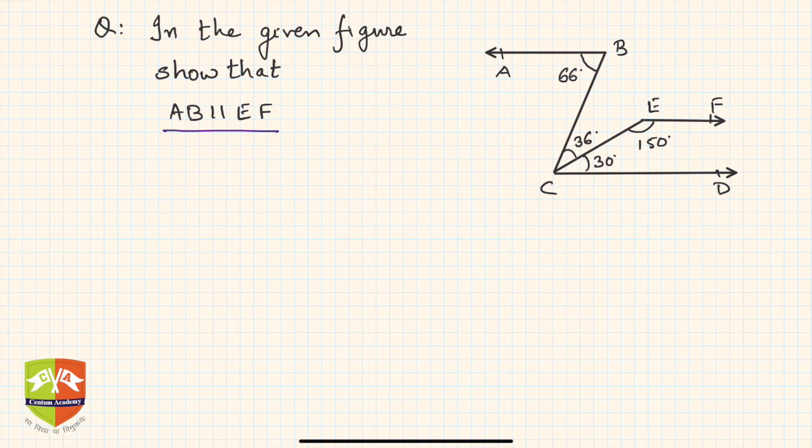In such problems it's always a good idea to start from whatever is to be proven. Let's say it is to be proved that AB is parallel to EF. Now think about the case when AB is actually parallel to EF, then what will happen, and see whether the conditions match with the given conditions.